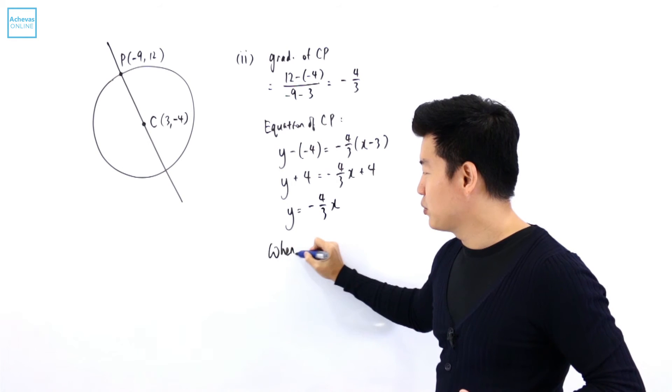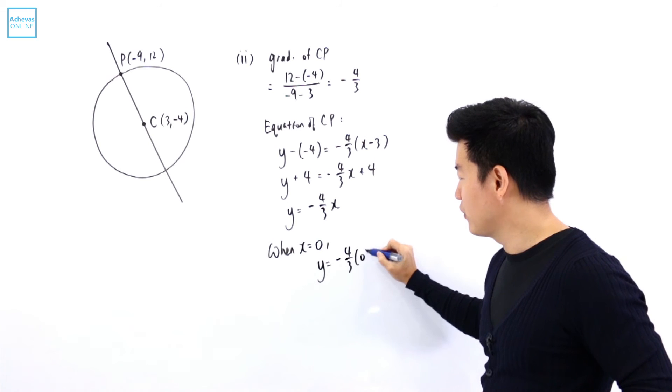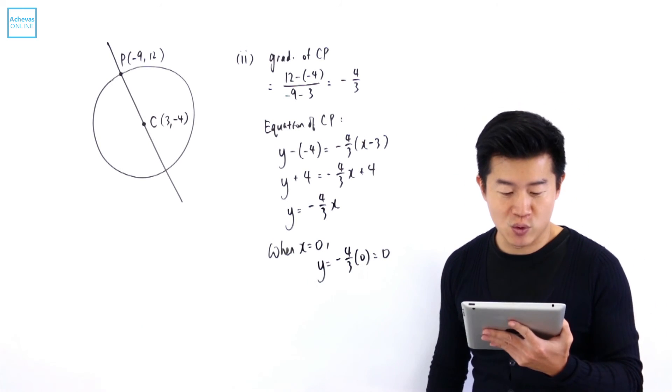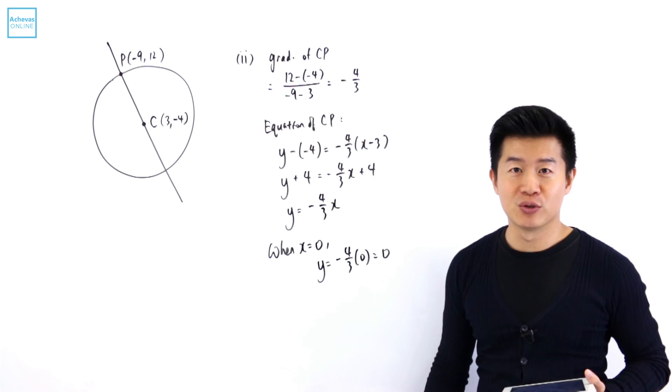So it is pretty obvious already that when X is equal to 0, Y, which is going to be minus 4 over 3 times 0, is 0. That is how we can conclude that CP passes through the origin.